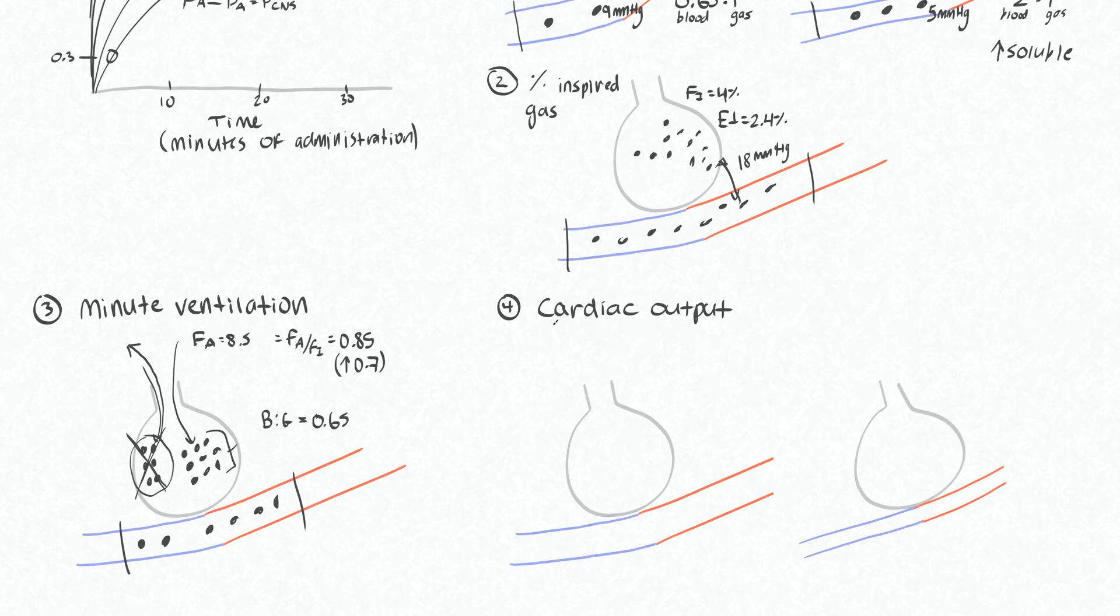We'll spend a little bit more time talking about cardiac output. I think it's the least intuitive of all these factors that impact your rate of rise of the gas. You would think that by increasing your cardiac output, you would increase the inhalational agent delivery to the brain and that would increase your speed. However, it is the opposite. Lowering your cardiac output will increase the speed of onset, so let me convince you why that happens.